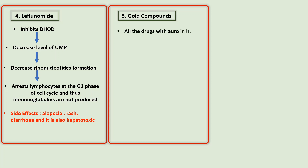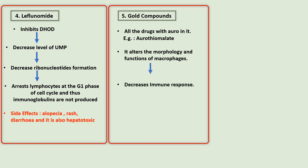Next is the gold compound — for example, aurothiomalate. These gold compounds alter the morphology and function of macrophages involved in cell-mediated immunity, thus decreasing the immune response. Side effects include hypersensitivity reactions, ulcers, proteinuria, and rarely aplastic anemia.